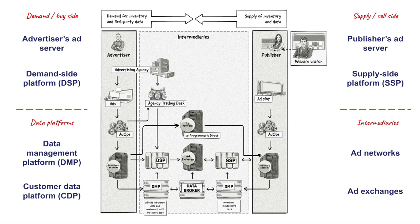A demand-side platform, or DSP, is a platform that allows media buyers — advertisers and agencies — to run advertising campaigns and buy inventory from various ad exchanges and SSPs through one user interface. DSPs are a key component of the real-time bidding process, which allows advertisers to buy media on an impression-by-impression basis. To help improve targeting, DSPs often utilize data from data management platforms, or DMPs, and data brokers.